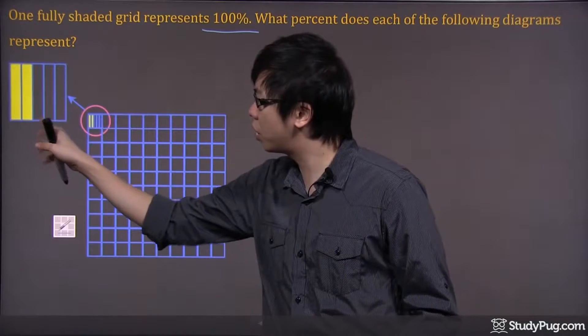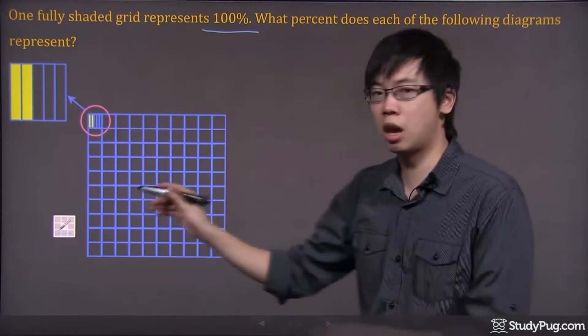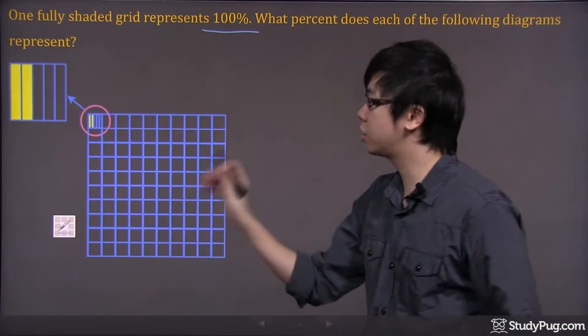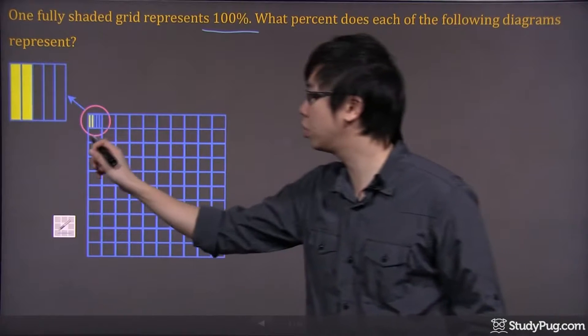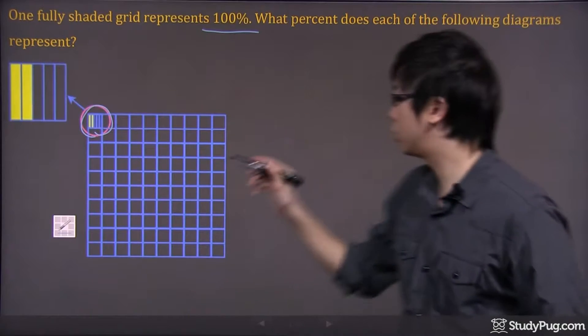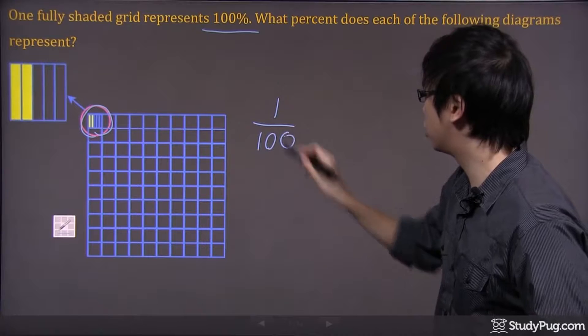The one that we're looking for is the yellow part. So first of all, let's analyze the bigger part first. There's 100 boxes right here and you're only picking one of the boxes. So so far, you're doing one over 100.